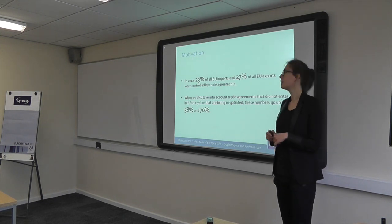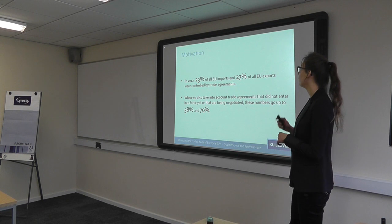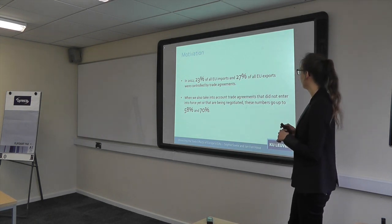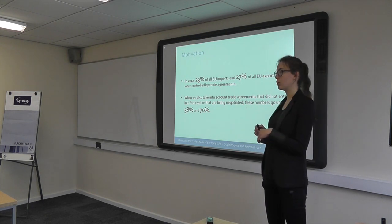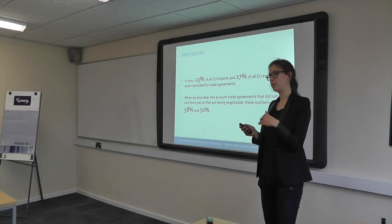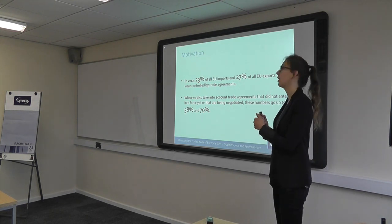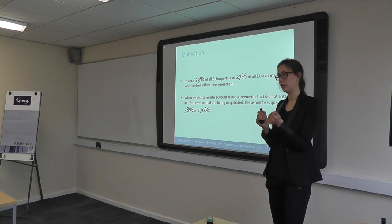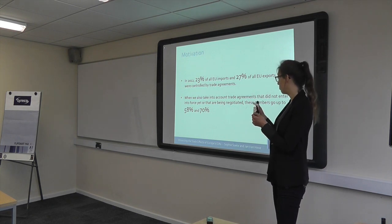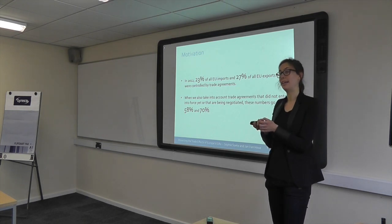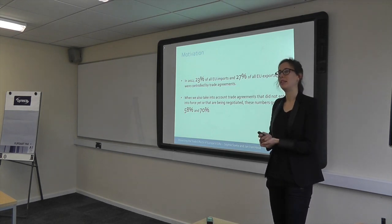In numbers, in 2012, 23% of all European imports and 27% of exports were controlled by trade agreements already in force. When we take into account those not yet entered into force or still being negotiated, those figures rise to 58% and 70%. And that's from 2012, so TTIP is not yet included — the numbers would be even higher.